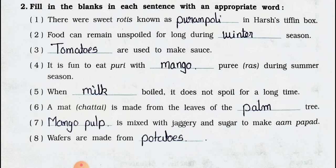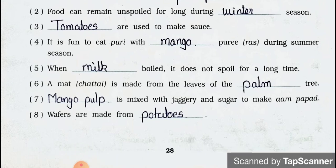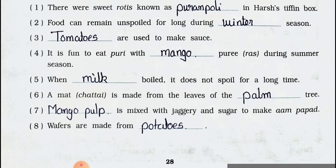Number 4: It is fun to eat puri with blanks during summer season — answer: Mango rass (mango pulp). We like to eat mango rass with puri. Number 5: When blanks is boiled it does not spoil for a long time — answer: Milk.